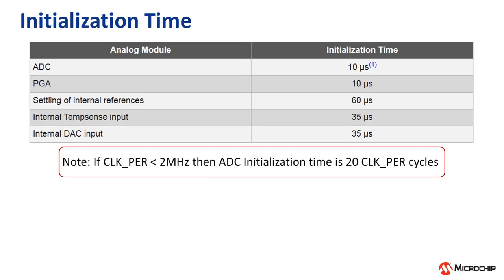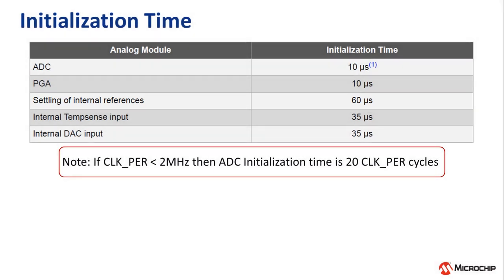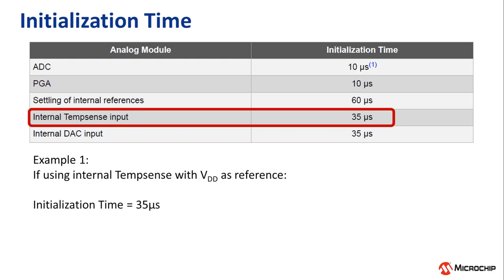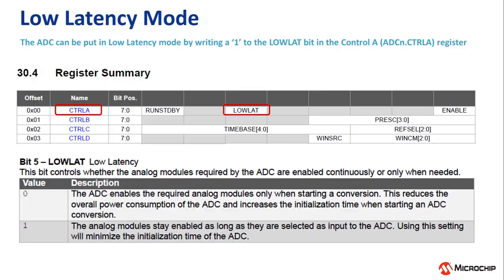Some of the analog modules in the ADC are disabled between conversions and must be initialized before a conversion can take place. The limiting factor is the module with the longest initialization time. For example, if we were using the internal temperature sensor as the input and VDD as the reference, that would give us a 35 microsecond initialization time. However, if we were to use the 1-volt internal reference, the initialization time would then be 60 microseconds. We can forgo these initialization times by using the low latency mode, which keeps the modules enabled between conversions, albeit at the cost of some additional power consumption.